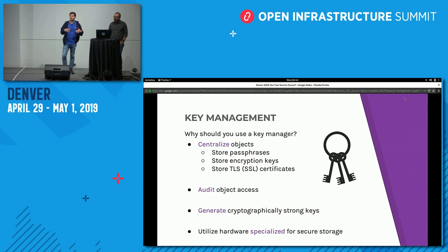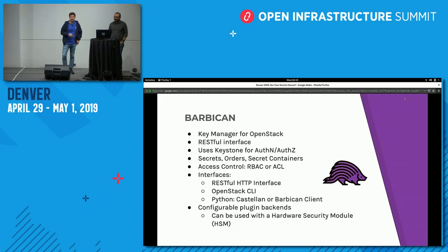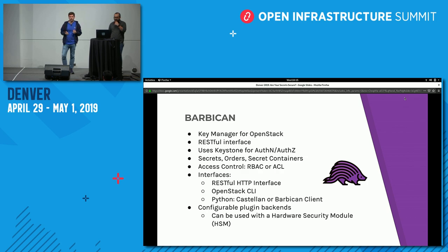By centralizing your key manager, you also have an opportunity to take advantage of specialized hardware for storage — HSMs, or hardware security modules. When you look at centralized key management in OpenStack, that project is Barbican. Barbican is the key manager for OpenStack. Just like any OpenStack service, it starts off with a front end RESTful interface. To send requests to it, you start with a Keystone token, which takes care of authorization and authentication.